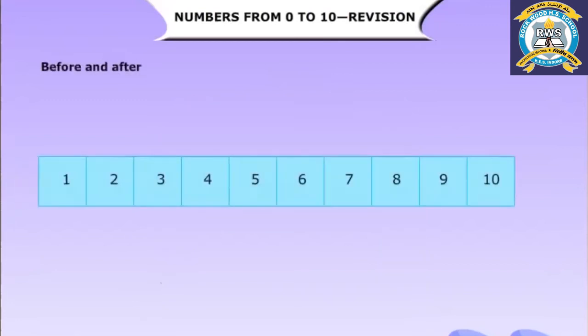Before and after. The number before eight is the number to the left of eight. The number before eight is seven. The number nine is to the right of eight. The number after eight is nine.